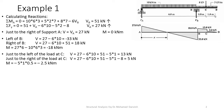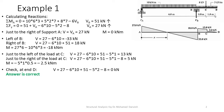For the moment at C, it is easier to take the section and look to the other side because it has fewer loads. So M equals minus 5 times 1 times 0.5, which gives minus 2.5 kN·m.